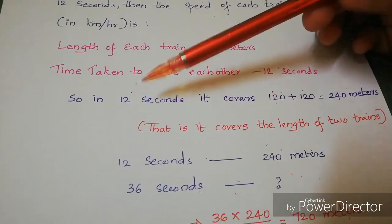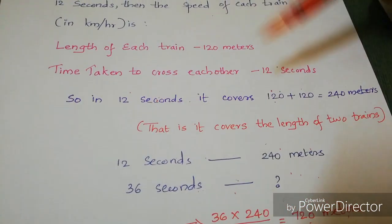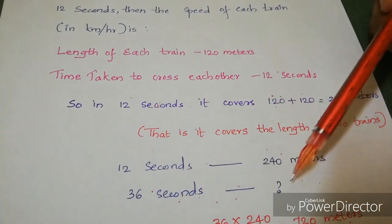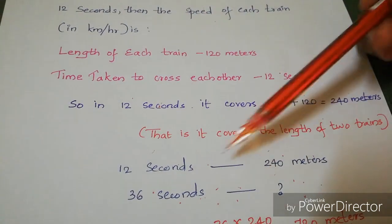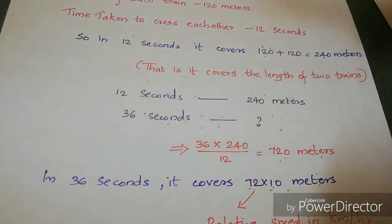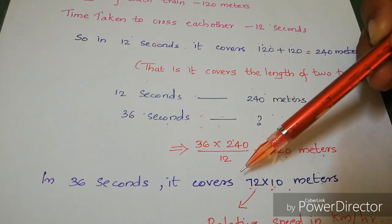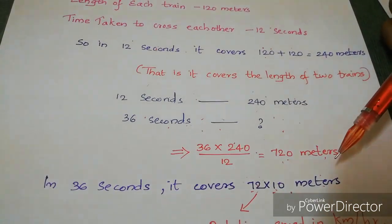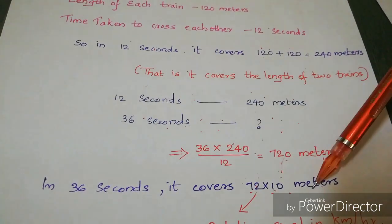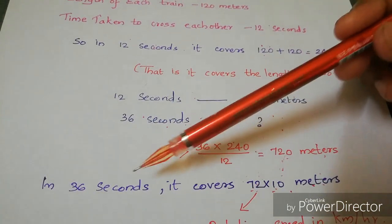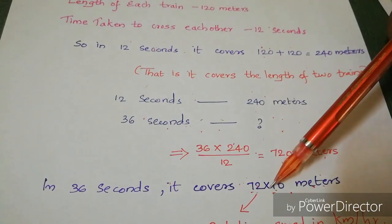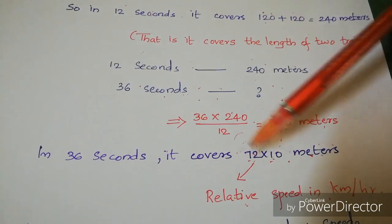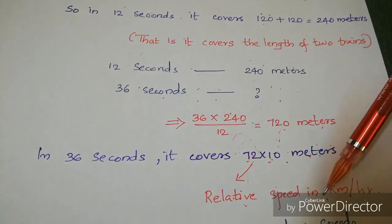So in 12 seconds they cover 240 meters. Cross-multiplying to find what is covered in 36 seconds: 36 × 240 ÷ 12 = 720 meters. Using our trick: 720 = 72 × 10, so the relative speed of the two trains is 72 kilometers per hour.